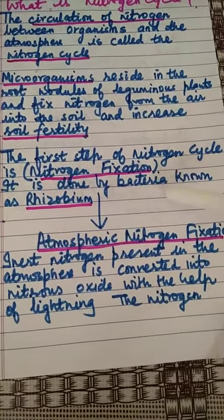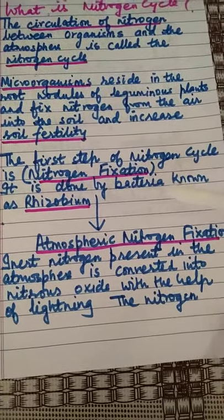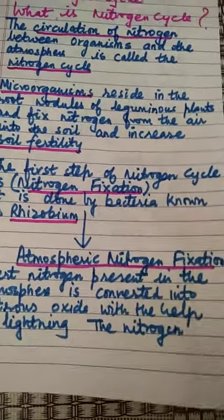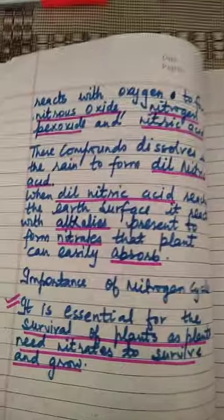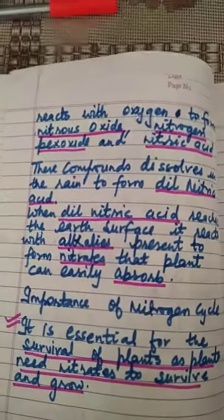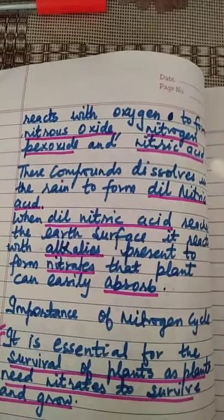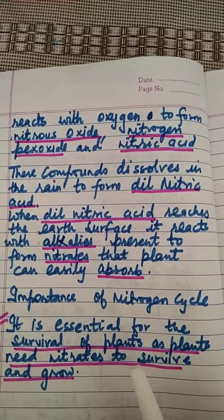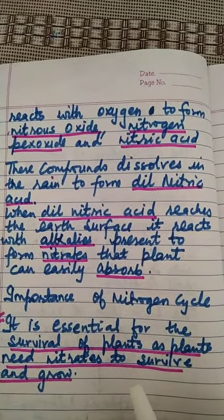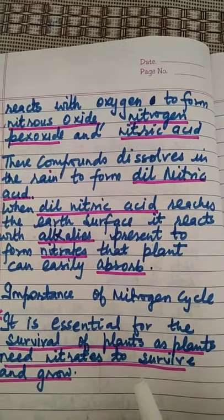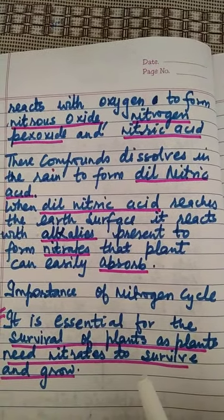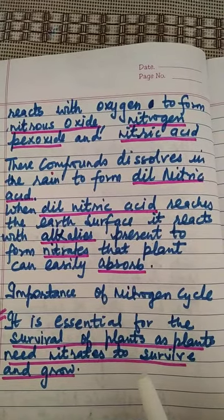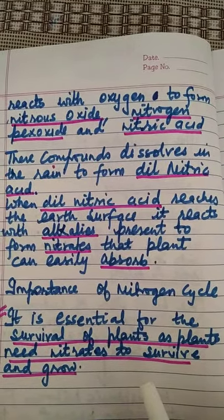Nitrogen then reacts with oxygen to form nitrous oxide, nitrogen peroxide, and nitric acid. These compounds dissolve in rain to form dilute nitric acid.